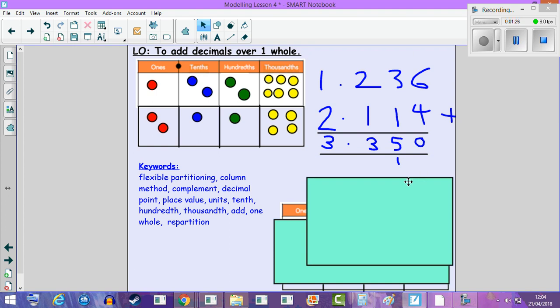We repartition the thousandths into the hundredths as one hundredth. We have three hundredths add one hundredth add one hundredth is five hundredths. Two tenths add one tenth is three tenths, and one add two is three, so our final answer is 3.350 or just 3.35.